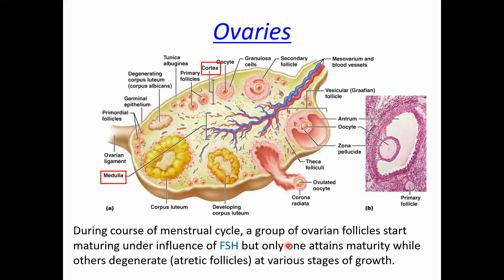During the menstrual cycle, a group of ovarian follicles start maturing under the influence of FSH — follicle stimulating hormone. But only one attains maturity while the others degenerate and are called atretic follicles at various stages of growth. Every month, one of the ovaries releases the ovum. Many follicles try to become the Graafian follicle, but only one succeeds while the others degenerate and are called atretic follicles.